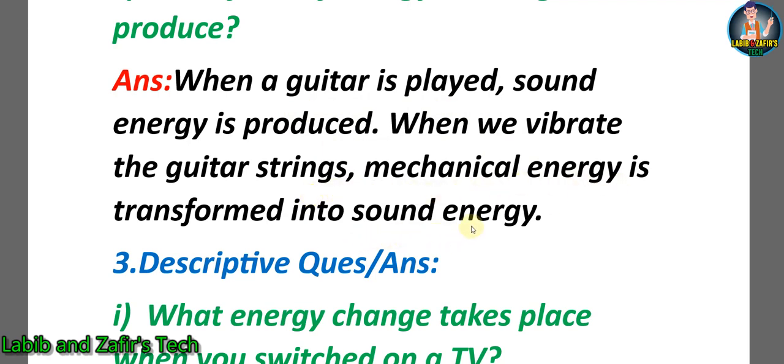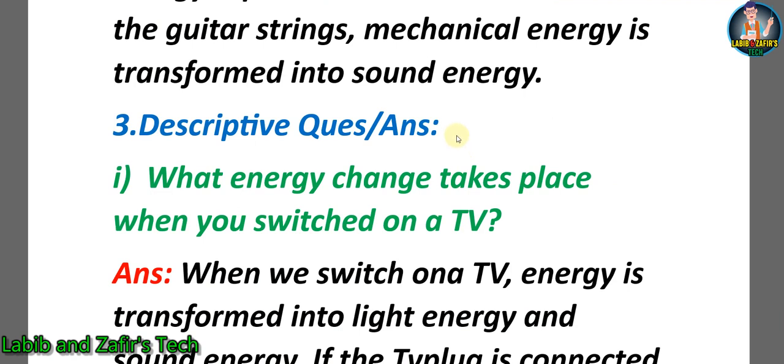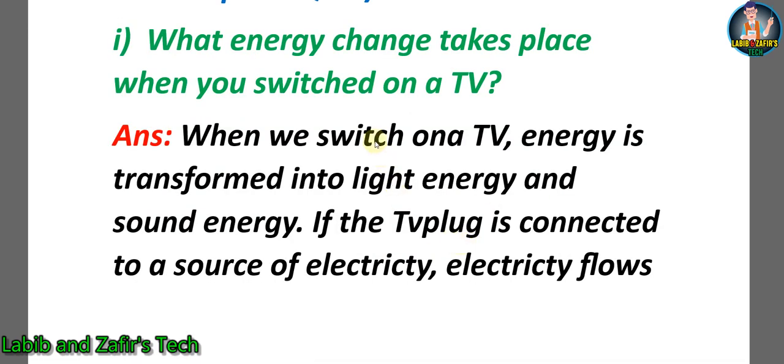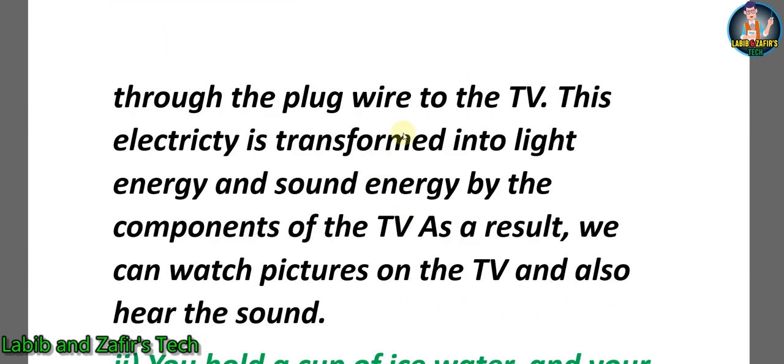Now students, let's go through some descriptive question answers. Number one: what energy change takes place when you switch on a TV? Answer: when we switch on a TV, energy is transformed into light energy and sound energy. If the TV plug is connected to a source of electricity, electricity flows through the plug wire to the TV. This electricity is transformed into light energy and sound energy by the components of the TV. As a result, we can watch pictures on the TV and also hear the sound.